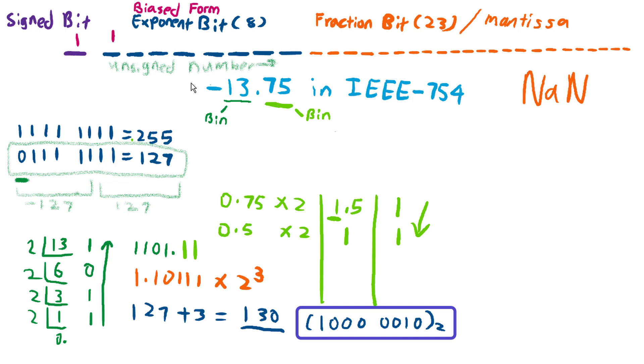And then the fraction bit: we don't look at this number 1, we are going to only look at this, so it's 10111 and then followed by zeros.